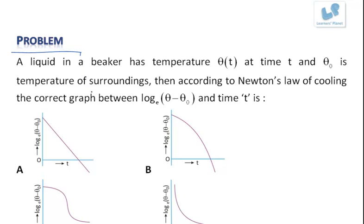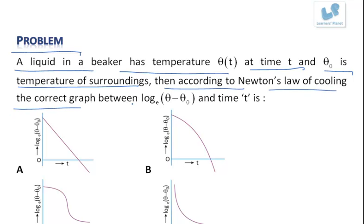Now let us look at the first problem. A liquid in a beaker has a temperature theta at time t and theta naught is temperature of the surrounding. Then according to Newton's law of cooling, the correct graph between log to the base E of theta minus theta naught and time t is.